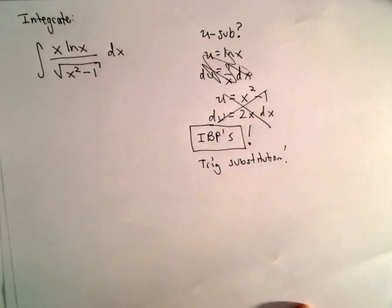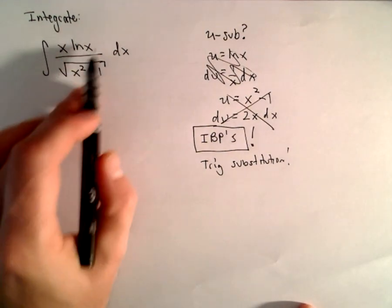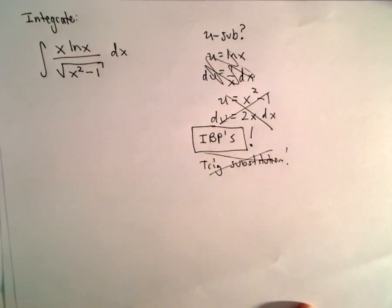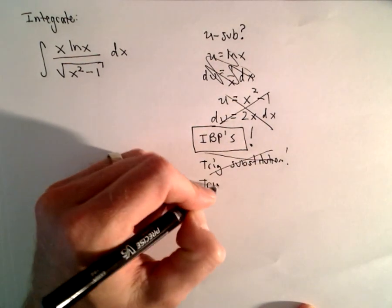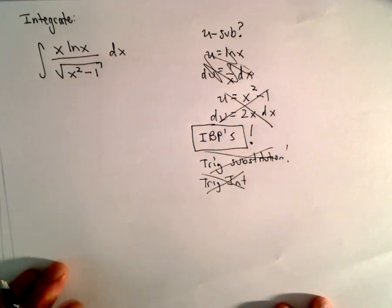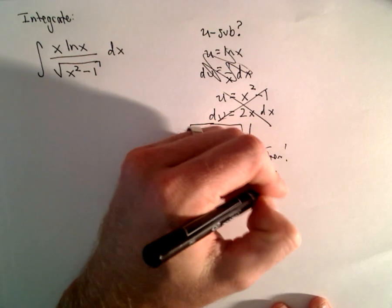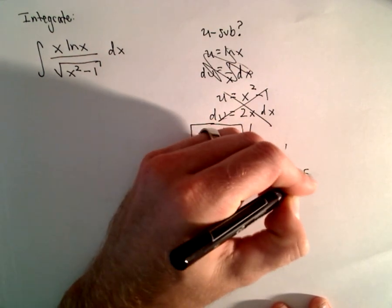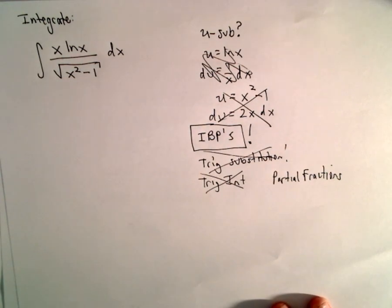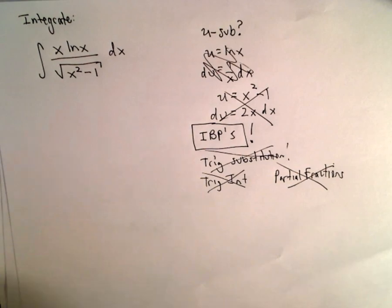Now, a lot of times this almost looks like a trig substitution problem, but the fact that ln(x) is present makes me think it's not going to be a trig substitution. It's definitely not a trig integral — there's no trig in there. And the last option, partial fractions — I don't see this being a partial fractions problem. So the only thing left to me is to do integration by parts.